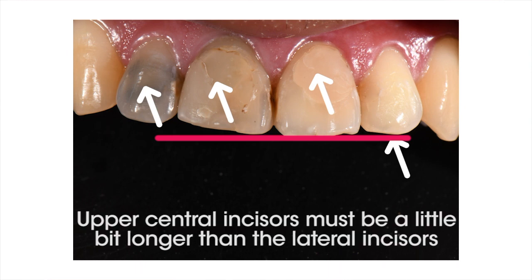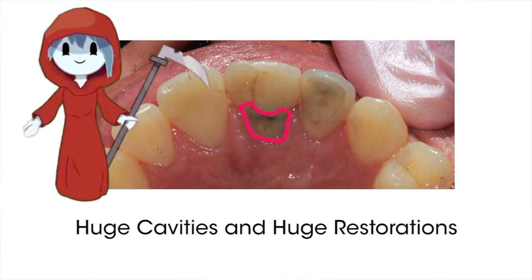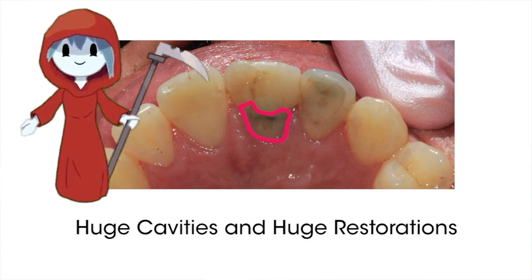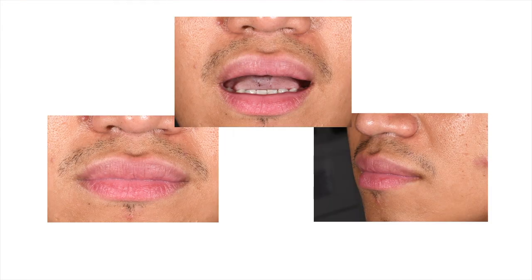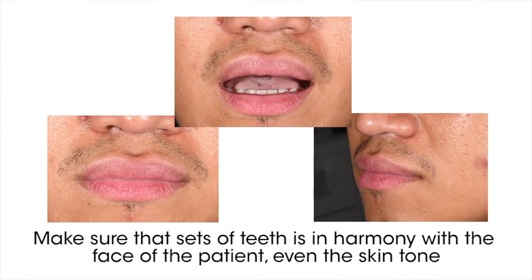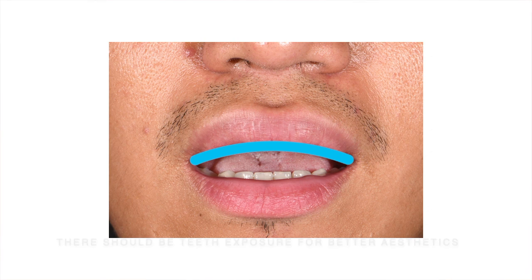The golden proportion says that the upper central incisors must be a little bit longer compared to the lateral incisors. The lingual area of the central and lateral incisors is also compromised — there are huge cavities and a huge restoration as well. Facial assessment is very important in doing a smile makeover; it's not just about having nice teeth but also making sure it is in harmony with the patient's face. The shade should also be in harmony with the skin tone. Here we can see a negative exposure of the teeth during repose.